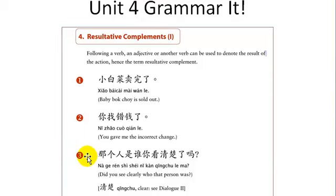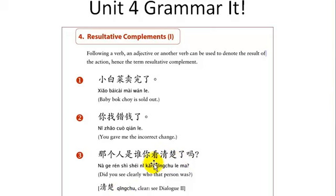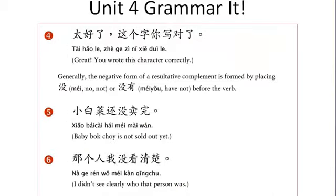Another example: 那个人是谁？你看清楚了吗? — did you see clearly who that person was? 清楚 means 'clear', so 看清楚 means 'see clearly.' 太好了，这个字你写对了 — great, you wrote this character correctly.